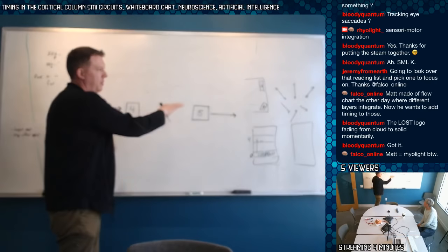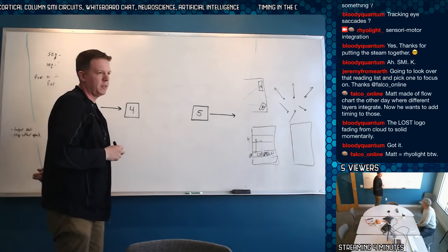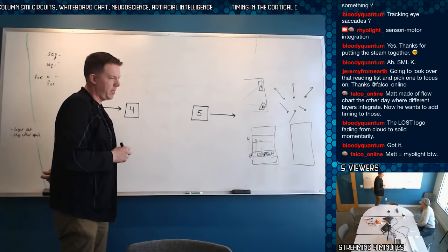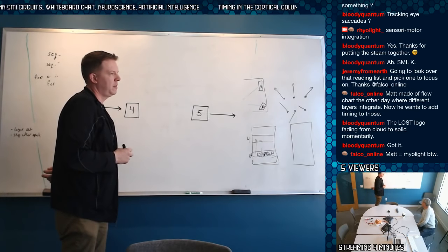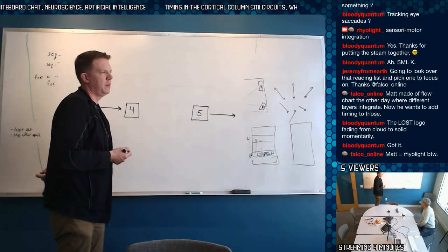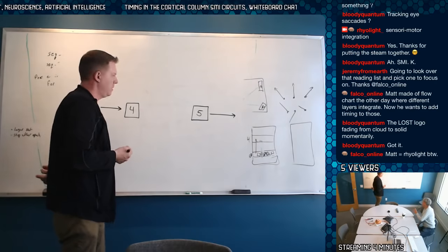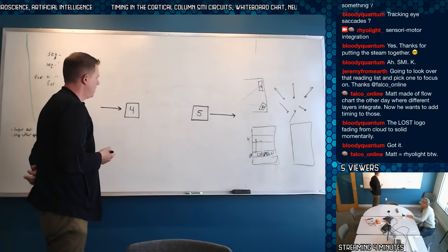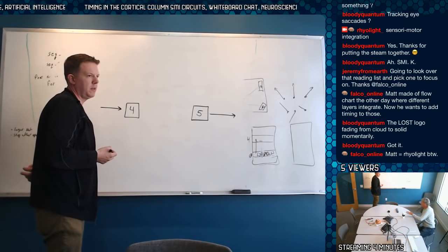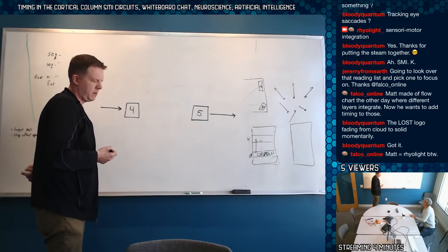I'm trying to trace the flow of information through the circuit. The goal of the cortex is to build a model of the world — not to get an input and do something. Building the model of the world involves movement, but I don't want anyone to think: you got an input, you process it, you get an output. No — you get an input, you build a model of the world, and the model of the world is moving the input around.